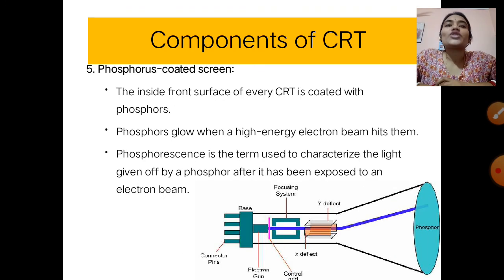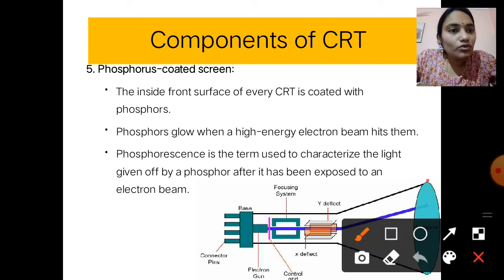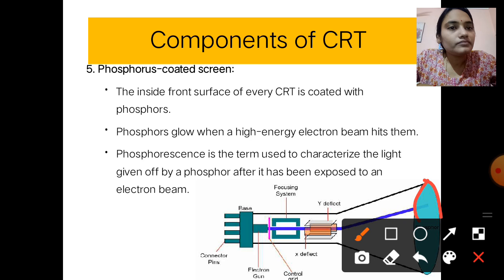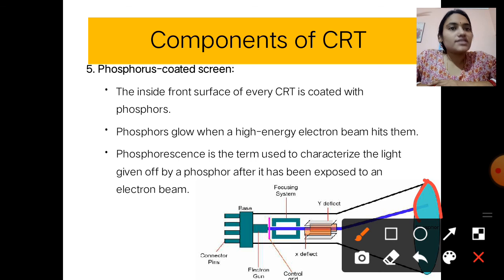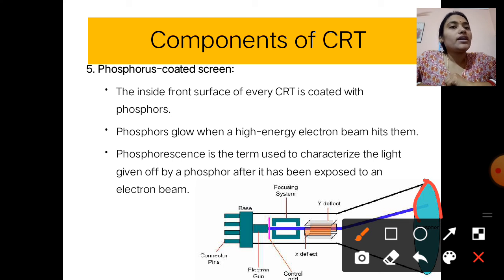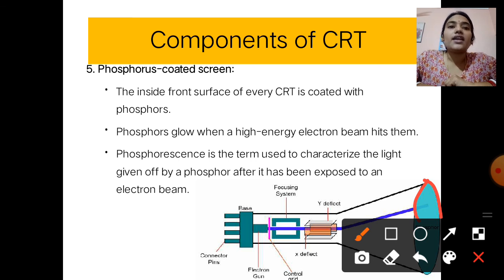The last component is the phosphorus-coated screen. The inside front surface of every CRT is coated with phosphorus. Phosphorus glows when a high-energy electron beam hits it. The term 'phosphorus screen' characterizes the light given off by a phosphor after it has been exposed to an electron beam.